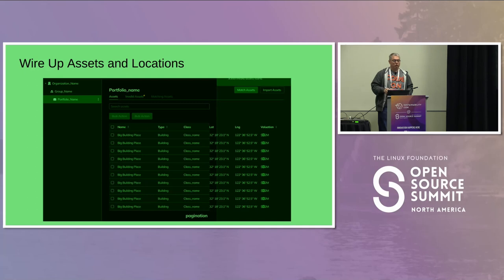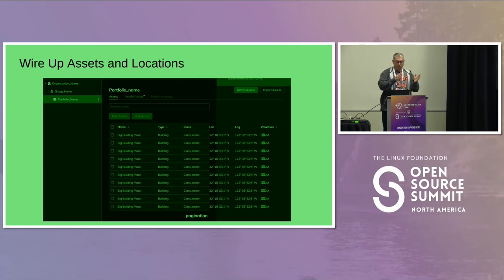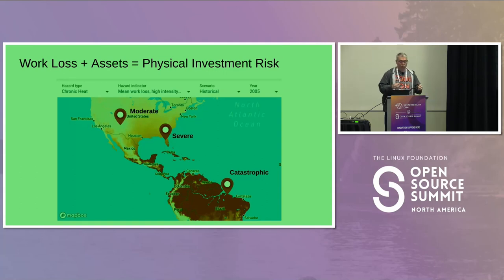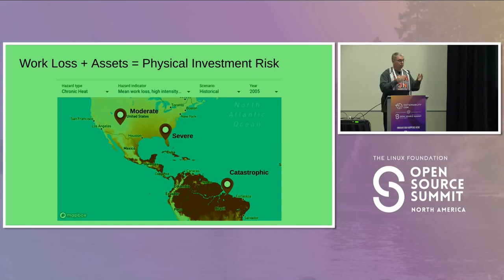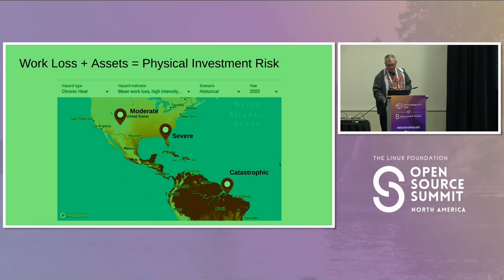We're also wiring up ways for people to enter asset information — actual physical locations of things like factories and warehouses in lat/long. Once we have this and connect these two things, what we're showing here conceptually is: depending on where your assets are, the risk based on a particular model scenario could range from moderate risk to, if you're in Florida, more severe, and if you're too close to the equator, potentially catastrophic — total productivity loss due to heat.